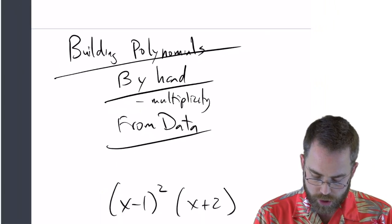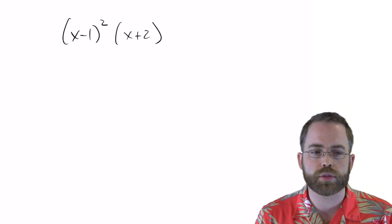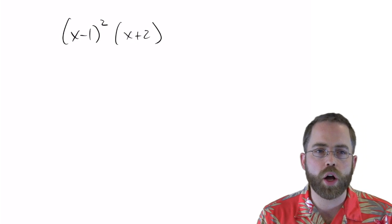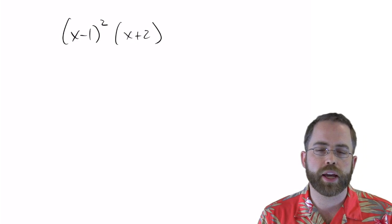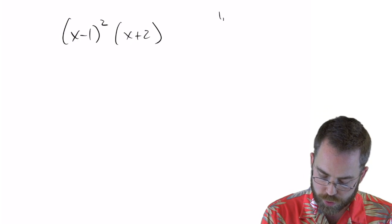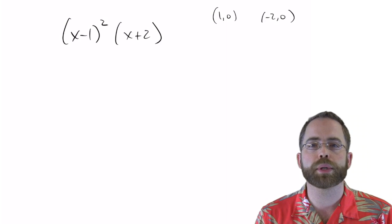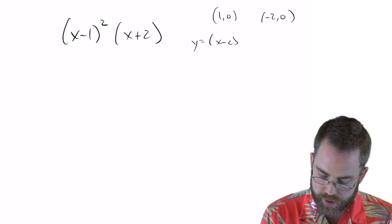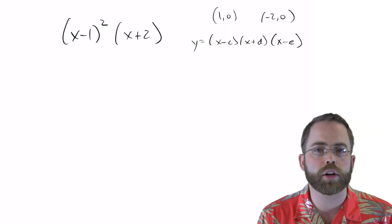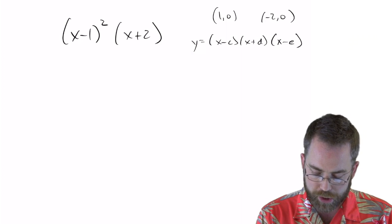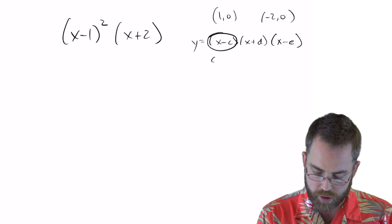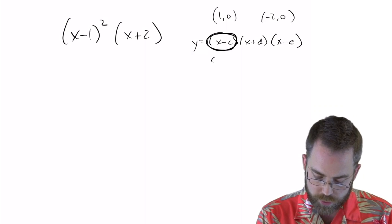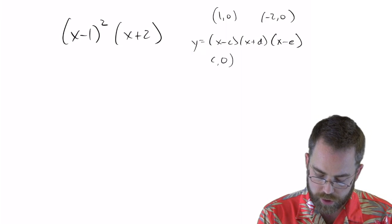So first of all, let's make a polynomial by hand. Suppose you knew that you wanted a polynomial of cubic degree, three branches, and you want it to go through the points 1 and negative 2 on the x-axis. If you want to go through 1 and negative 2, you know that you can build something that will guarantee that result. If we make a polynomial of x minus c times x plus d times x minus e, and on and on, we could pick all the letters we wanted. When we plug in c into this, this term right here is going to make a 0. And anything times 0 is 0. So these will all make 0s for us, guaranteeing we go through that point.